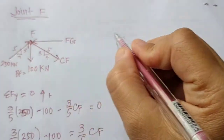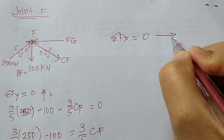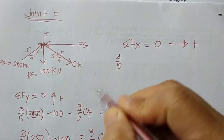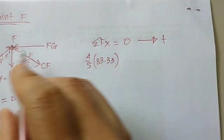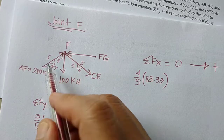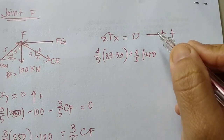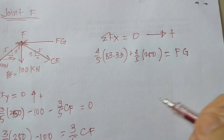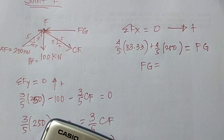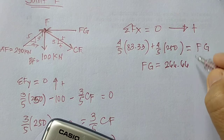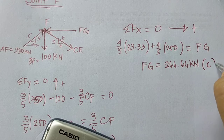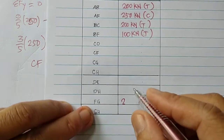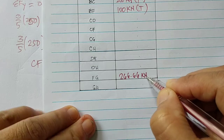Summing forces along the x-axis at joint F equals zero, going right positive: (4/5) of CF (83.33) plus (4/5) of AF (250) is counteracted by FG. Therefore FG = 266.66 kilonewtons. Positive result confirms the assumption — FG is a compression member.